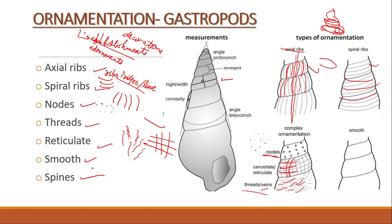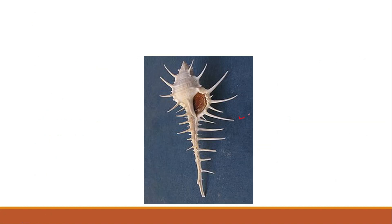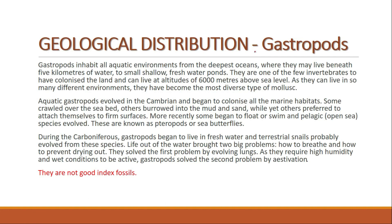Then you have spines — thorn-like sharp structures. This is found in the murex shell. You can see these are spines present on the murex shell. So to summarize, the ornamentations are: axial ribs, spiral ribs, nodes, threads or veins, reticulate, spines, and if nothing is present, it is called smooth.